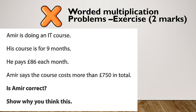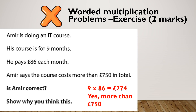Amir is doing an IT course. His course is for nine months and he pays £86 each month. Amir says the course costs more than £750 in total. Is Amir correct? In an exam situation, you do need a yes or a no — at entry three we will have a tick box, and at level one we'll have to write our yes or no. Pause and give this one a go. Hopefully you got 774, and yes, because he thinks it costs more than £750.